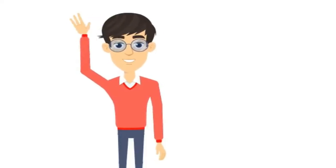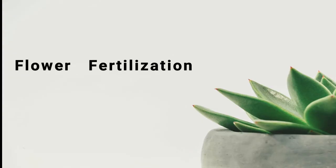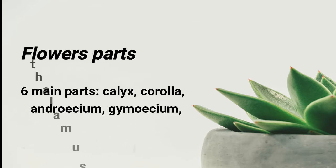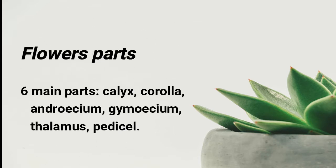Hello everybody, today's class is on flower fertilization. As a brief recap, flowers have six main parts: calyx, corolla, androecium, gynoecium, thalamus, and perisope. We've gone through those, so today I'll focus on androecium and gynoecium and their association.